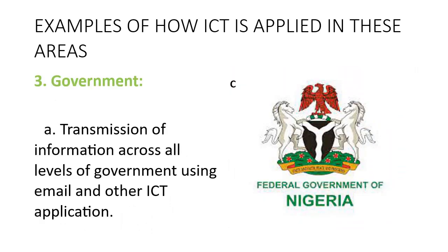In government, ICT is used for transmission of information across all levels of government. It takes only an instant for information to circulate throughout government. Any policy to be implemented is sent by email or other ICT applications so that those involved can implement it instantly. Transmission of information in governance is no longer a problem since e-government began.